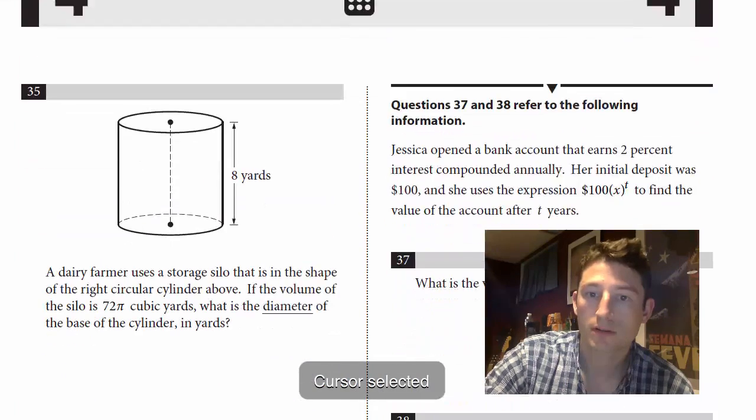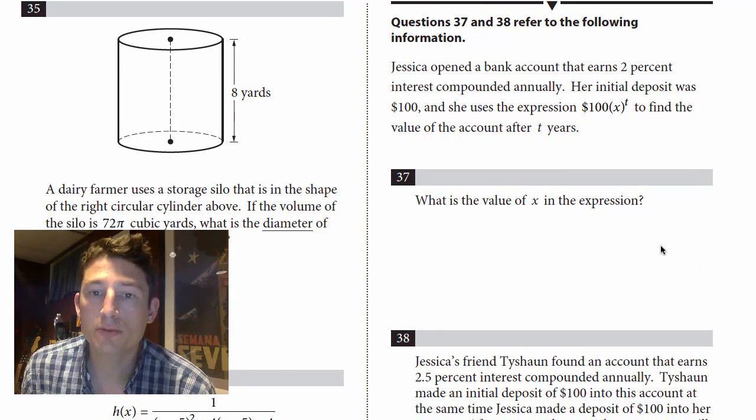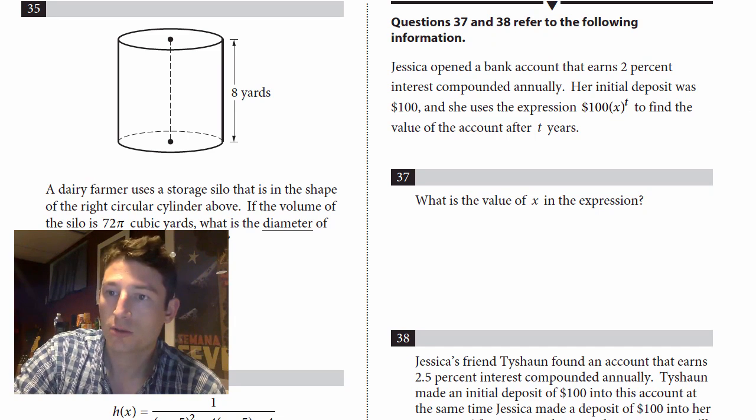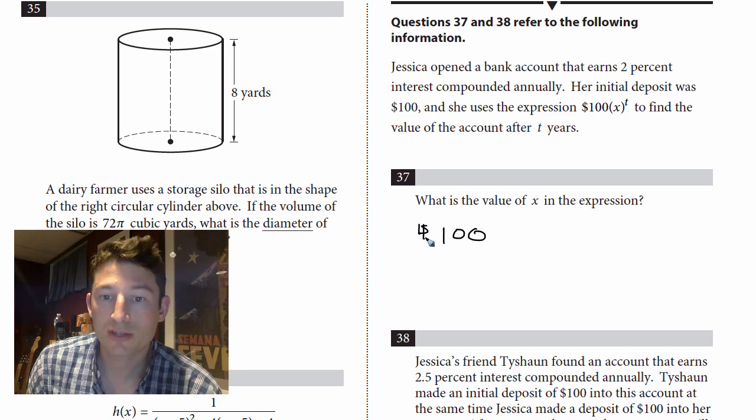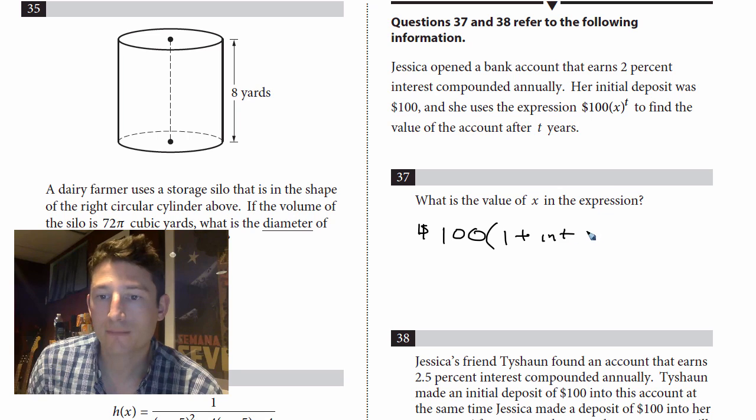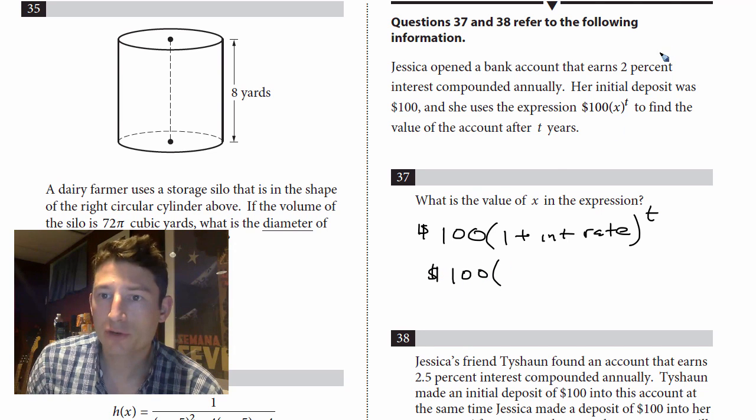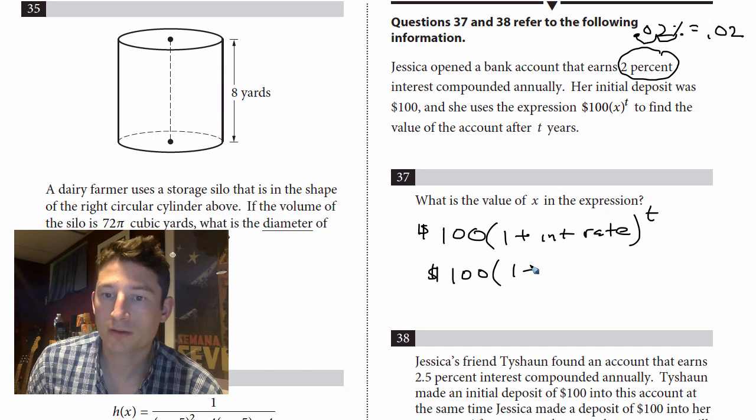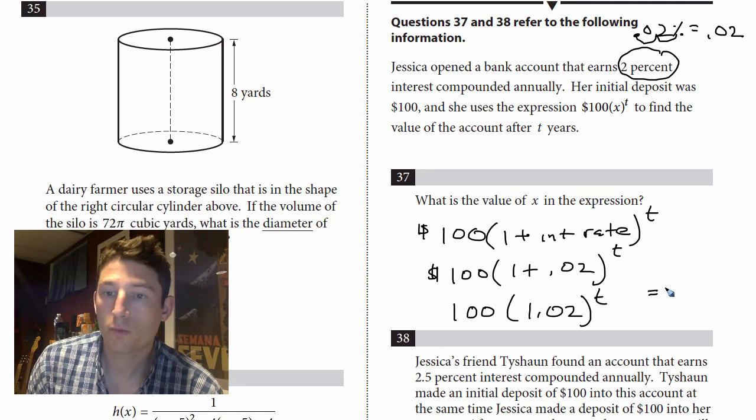All right, that's it. Move on to number 37. Let's see here. Jessica opened a bank account that earns 2% interest compounded annually. Her initial deposit was a hundred dollars and she used the expression 100 x to the t to find the value in the account after t years. What is the value of x in the expression? Well, if you guys saw any of my other videos, I told you that you put your starting value on the outside, which they did. And this in here is going to be one plus the interest rate. Now the only thing is, this is raised to the amount of time. So it's going to be a hundred. How do we convert two percent? Well, we can't just put a two in there. Two percent is we move this over two places. One, two point zero two. So that's going in here. One plus point zero two to the t. And I know I wrote this three times and that's a lot, but I just want to show you where it all came from. Your answer is going to be 1.02. That's what's going in there. Okay. One plus two percent. That's it.